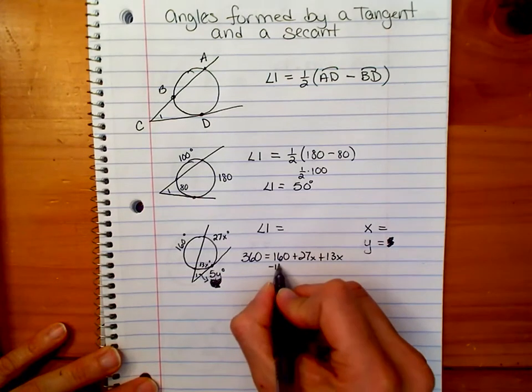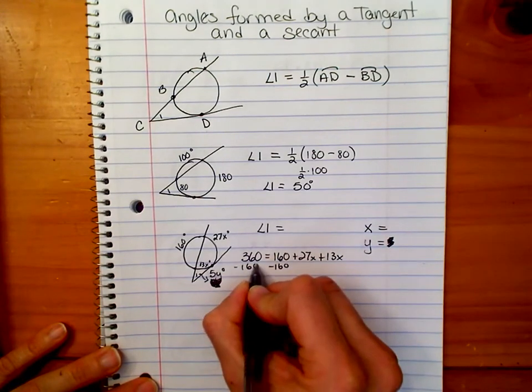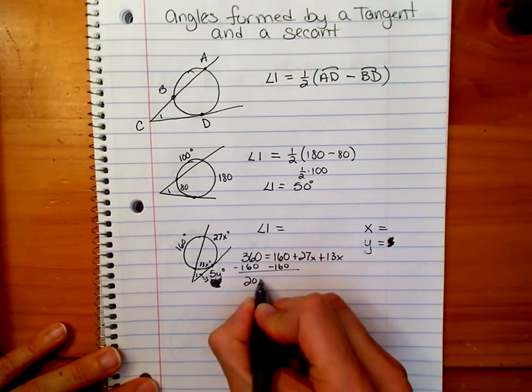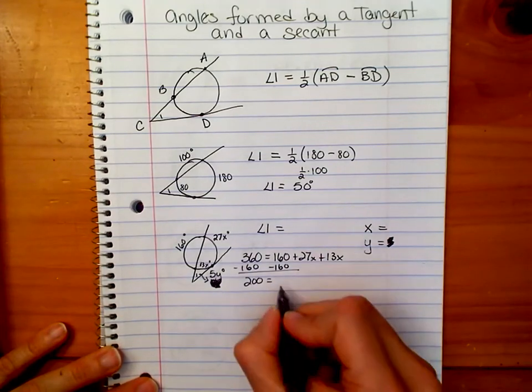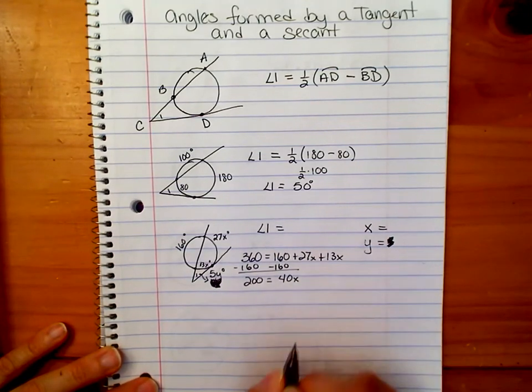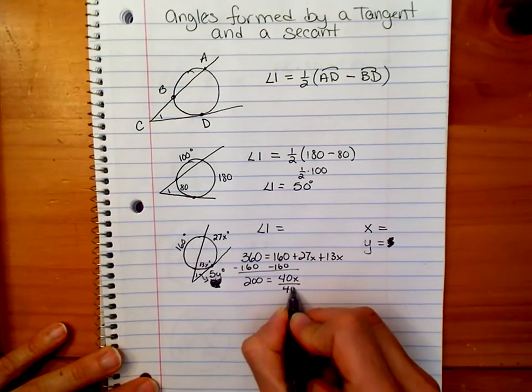If we subtract 160 from both sides, we get 200 equals, if we add 27 and 13, we get 40x. If we divide both sides by 40, divide by 10, 20 divided by 4 is 5.